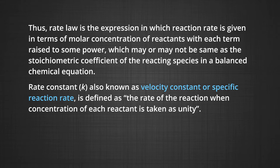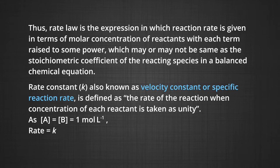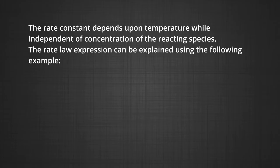The rate constant k, also known as velocity constant or specific reaction rate, is defined as the rate of the reaction when the concentration of each reactant is taken as unity, i.e., [A] = [B] = 1 mol/L, and then the rate equals k. Thus, the rate constant gives an idea about the speed of the reaction — a reaction with a higher value of the rate constant proceeds at a faster rate. The rate constant depends upon the temperature while being independent of the concentration of the reacting species.